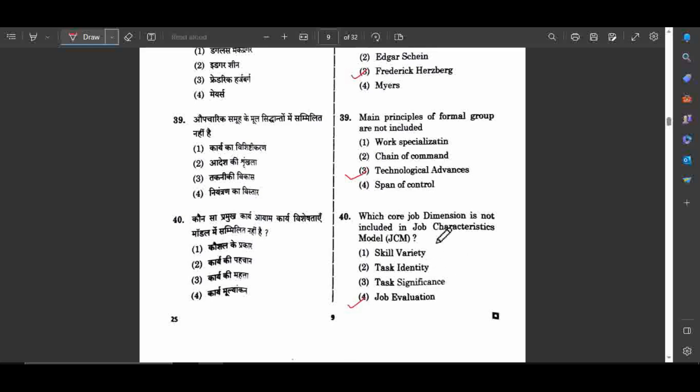According to this model, if we make tasks challenging, employees will be motivated automatically. If a task is monotonous or boring, employees will be demotivated. These three dimensions are in this model, plus autonomy and feedback.